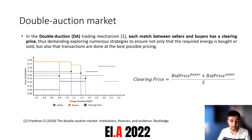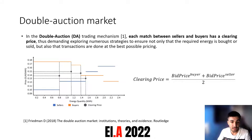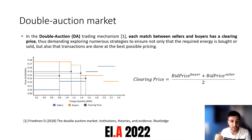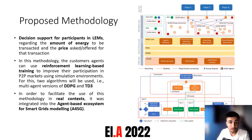On the left side of this slide we can see an example of a clearing process in this type of market. The sellers are organized by ascending bid price and the buyers by descending bid price. We keep matching the lowest-priced seller with the highest-priced buyer and continue doing this until there is no more energy to trade or no more possible matches between buyers and sellers.